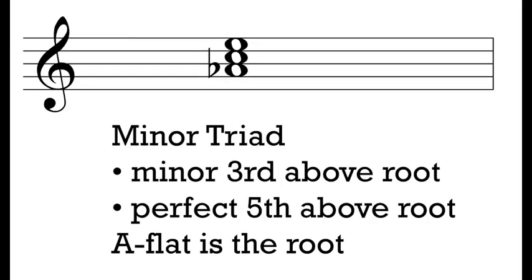What's the next thing we have to do? We have to recall the intervals we are looking for in a given chord. Since we want to draw a minor triad, I need to figure out what intervals make it up. I'm going to focus on the intervals above the root. I know that I need a minor third above the root and a perfect fifth above the root to draw a minor triad. My next step is to look at the intervals and make sure I put the right accidentals in so they match the ones I want.